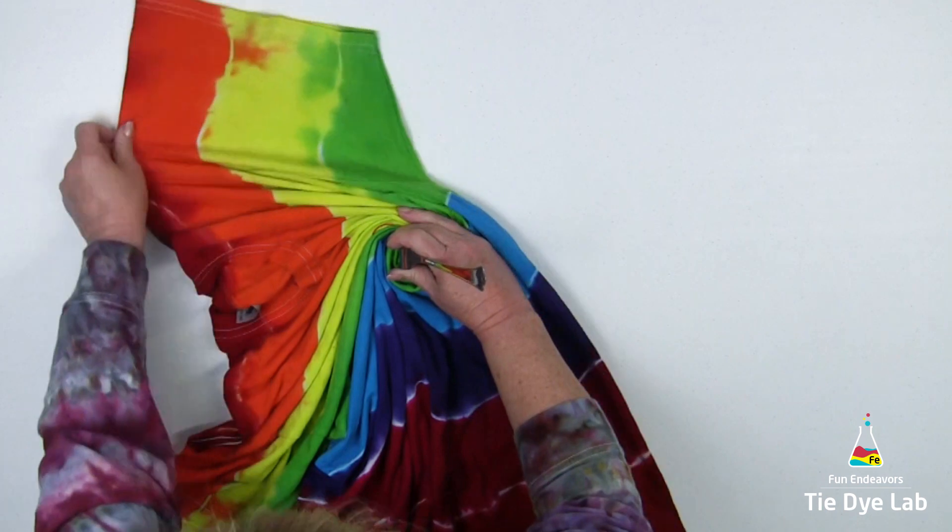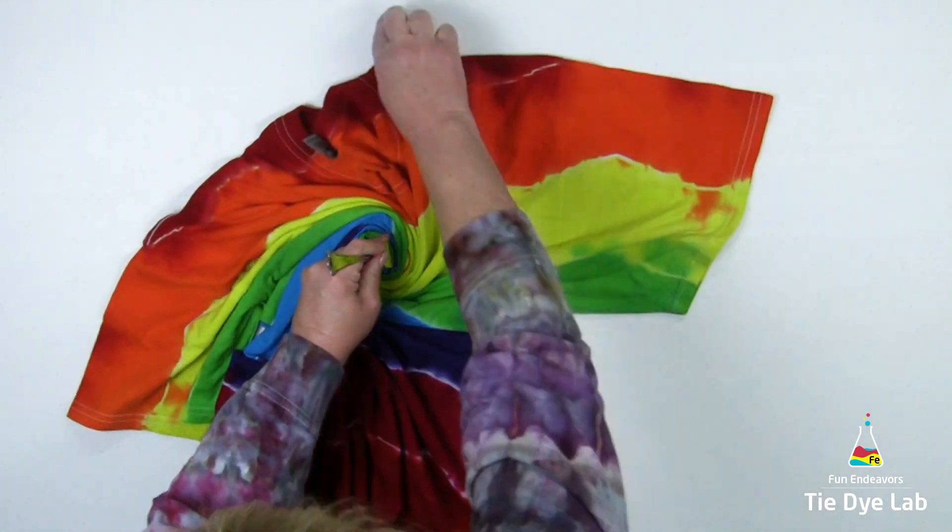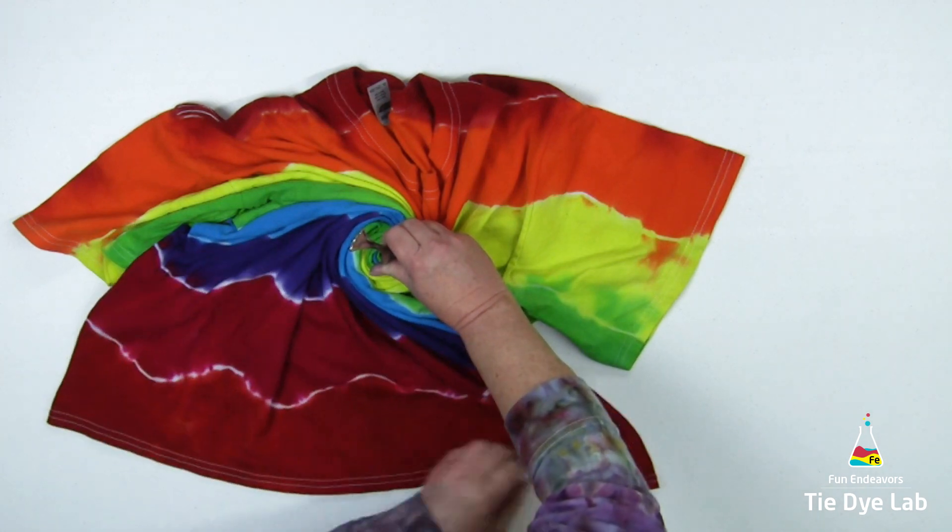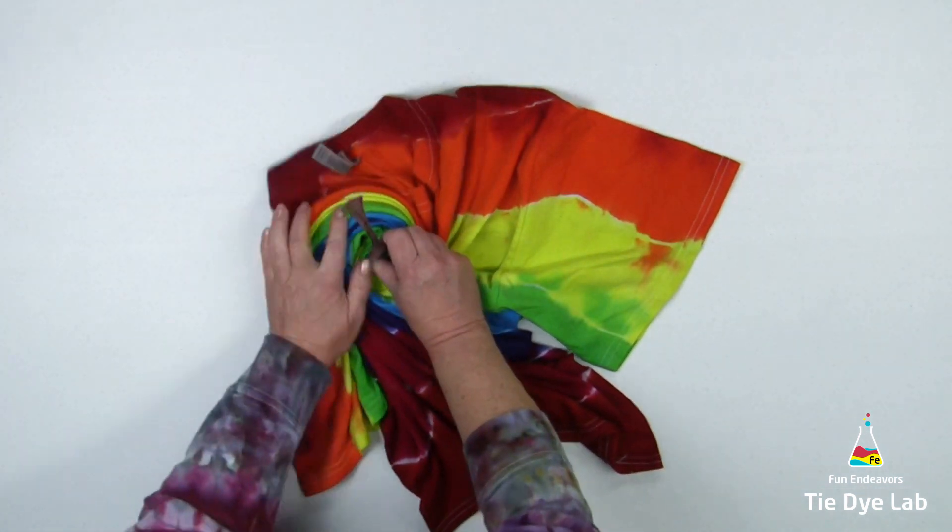I'm going to use a fork and spiral the shirt, and then I'm going to hold the folds in place with some rubber bands.